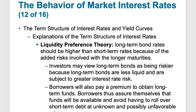The Liquidity Preference Theory holds that long-term bonds should yield more than short-term bonds because of the added risks involved in waiting longer for your principal to be returned — a longer maturity. Investors view longer-term bonds as riskier, less liquid, and subject to greater interest rate risk, so they should carry a higher rate of interest to compensate. Borrowers pay a premium to obtain long-term bonds to assure themselves funds will be available, avoiding having to roll over short-term debt at unfavorable rates. The basic point is that investors prefer liquidity and safety.